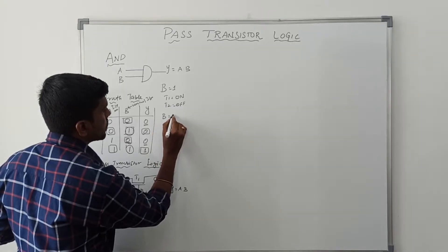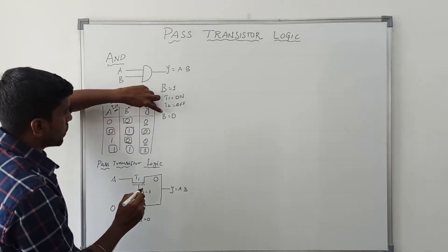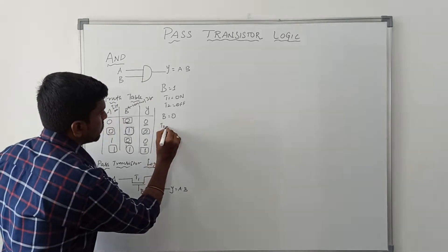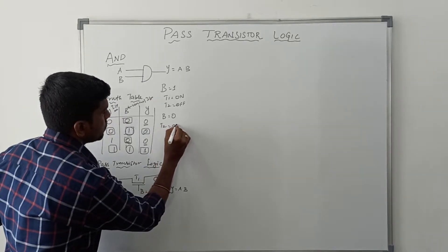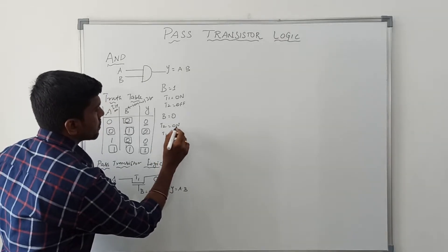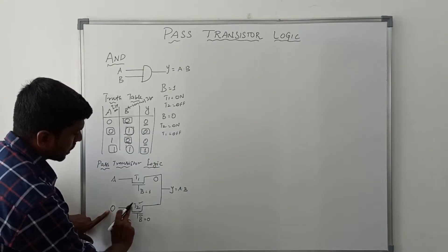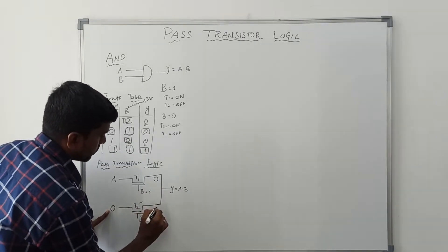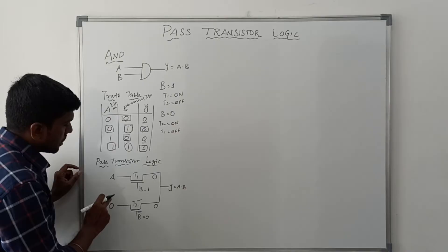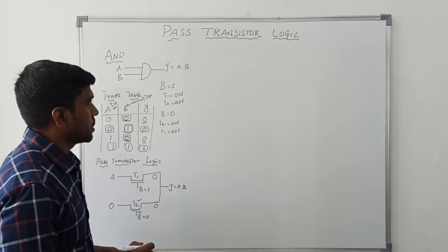Next case, B equals 0. So when B equals 0, T2 transistor turns on and T1 transistor is off. In this case, the 0 input value is transferred to the output side. Based on this input value and control signal, we can get the output result.